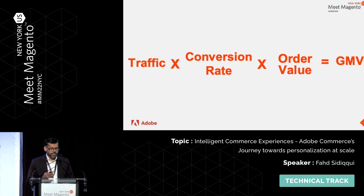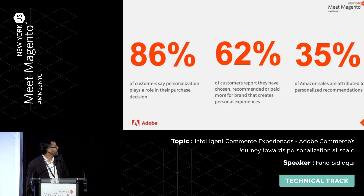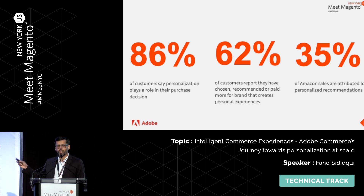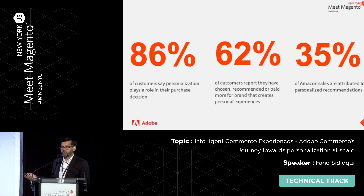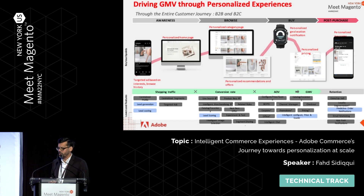We see that just from our launch of product recommendations, our merchants are seeing upwards of 20% in their average order volume. And this is actually true if you look at the statistics: 86% of customers say personalization plays a role in their purchase, with 62% saying they actually use product recommendations and sometimes even pay more for recommended products. Amazon reports that 35% of their sales is attributed to their recommendations — that's not chump change.